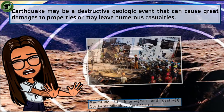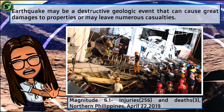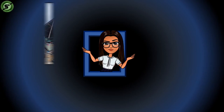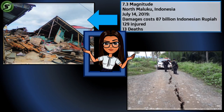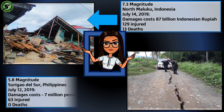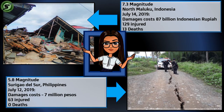On April 22, 2019, a magnitude 6.1 earthquake left 256 citizens injured and three casualties in northern Philippines. Also in 2019, the top two strongest earthquakes were recorded in Indonesia and the Philippines. A collapsed building in North Maluku, Indonesia, resulted from a 7.3 magnitude earthquake on July 14th, costing 87 billion Indonesian rupiah, with 129 injured and 13 deaths. A road that split in two from a 5.8 magnitude earthquake in Sarangani del Sur, Philippines, on July 12th caused damages of around 7 million pesos.